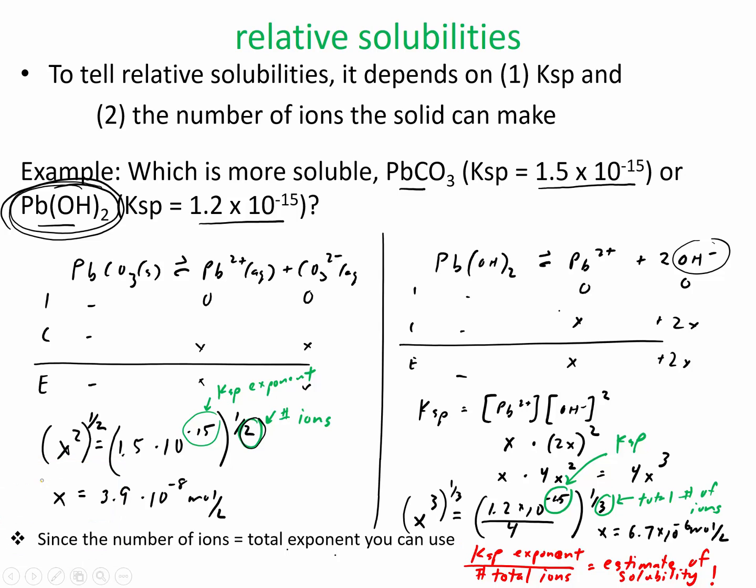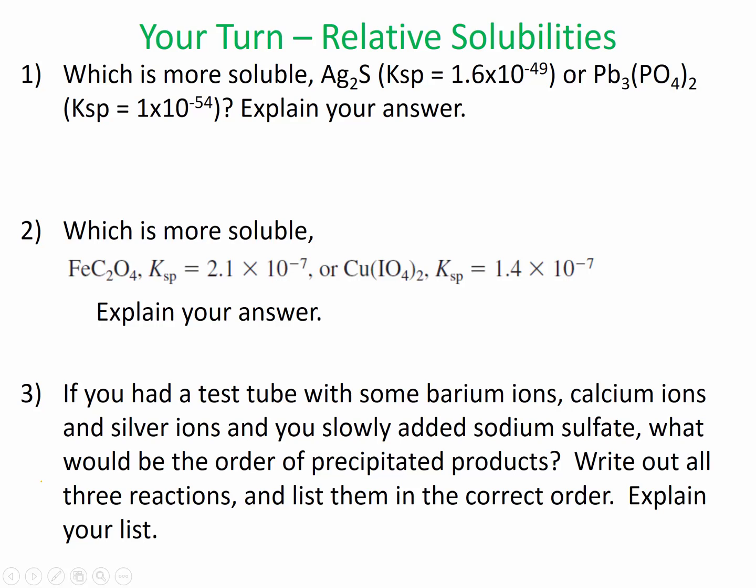So now for the practice, for the your turn practice. I have a couple questions here. So these first two are just like what I just did. You should be able to use the shortcut on both. There are times where the shortcut's not going to work, and you would actually have to calculate it, calculate the amount of x, the amount of shift that goes over to the right. It looks to me like you could use the estimate on both of these, on 1 and 2.